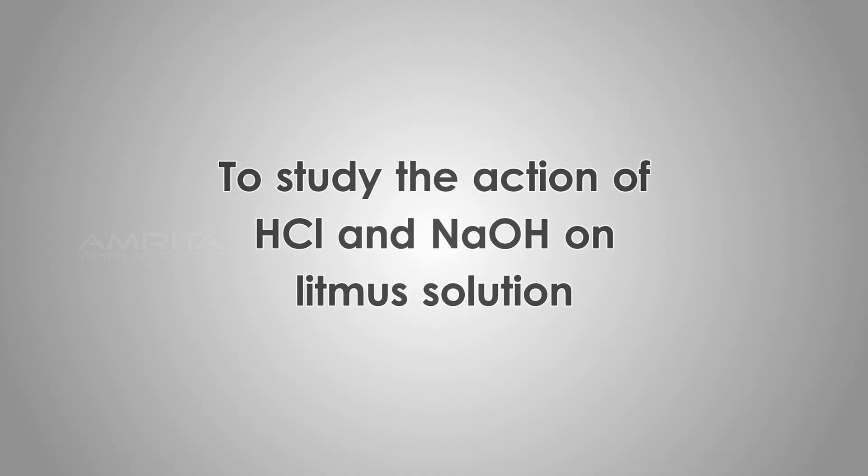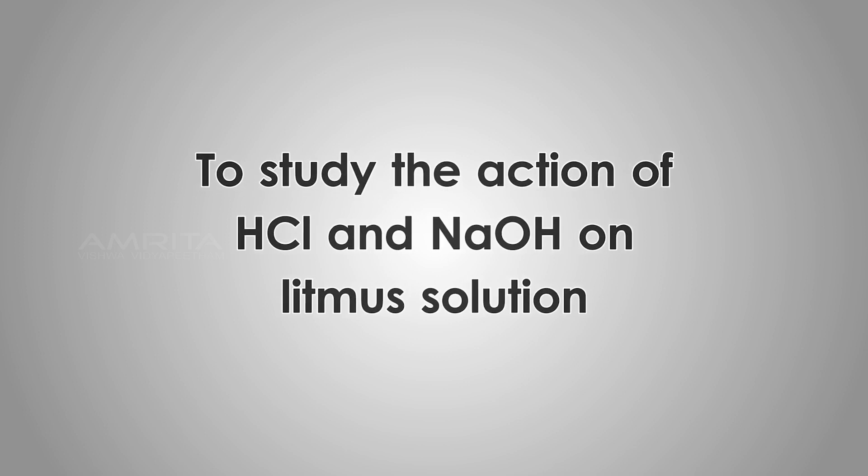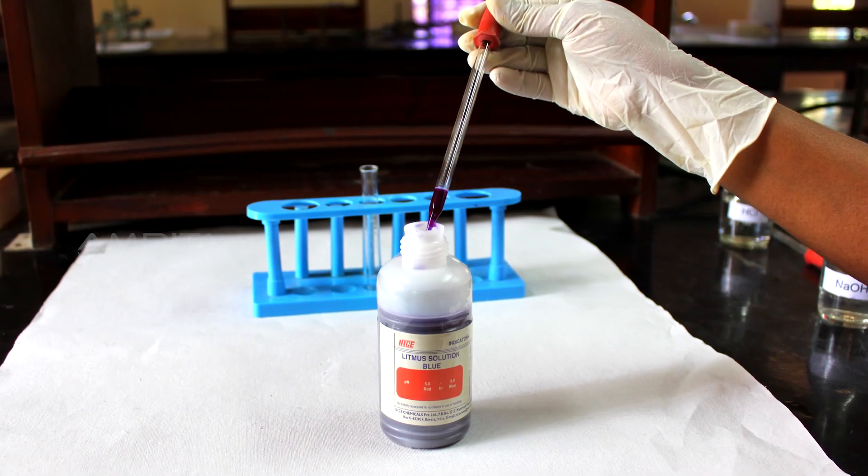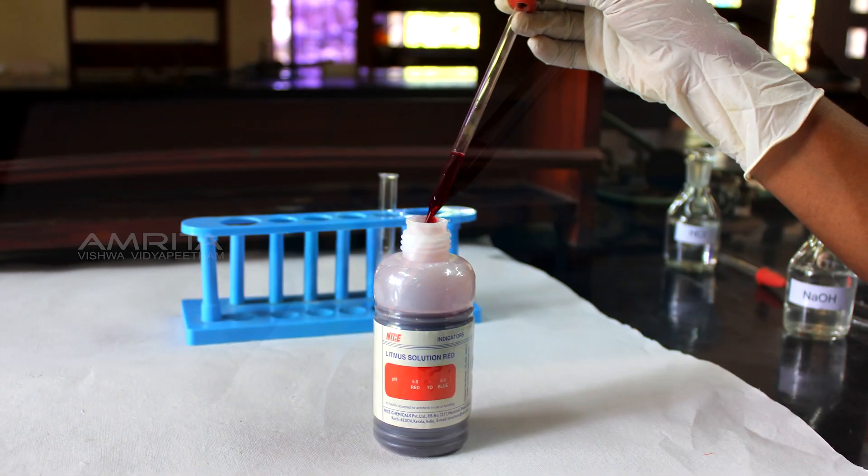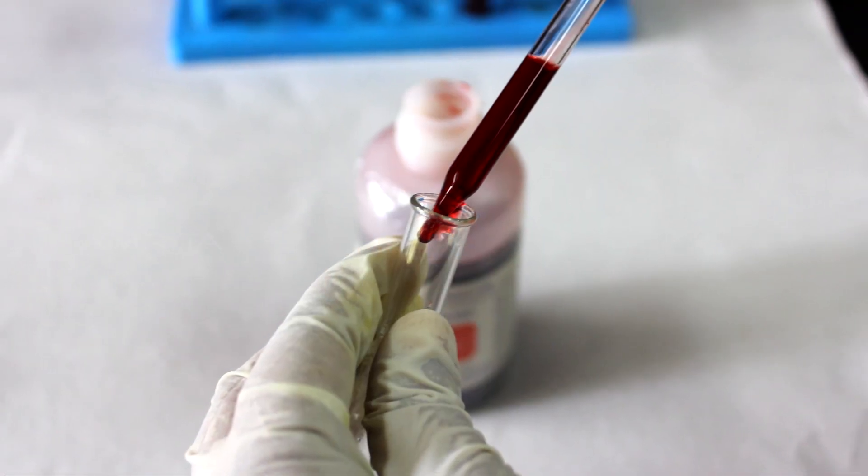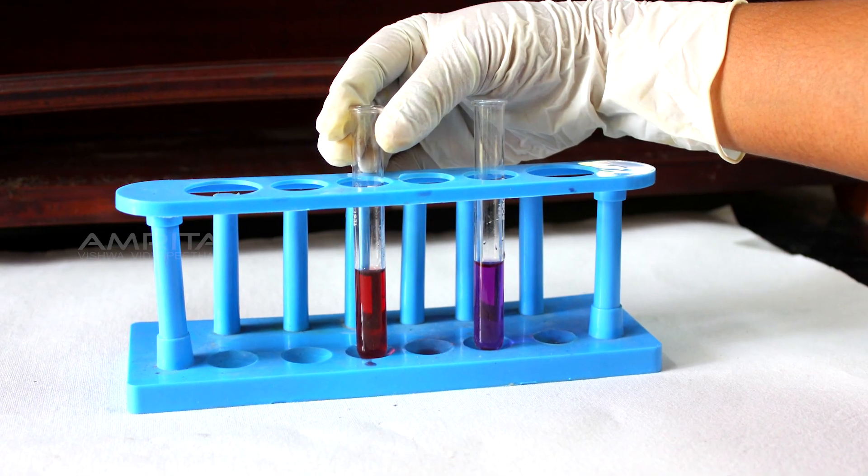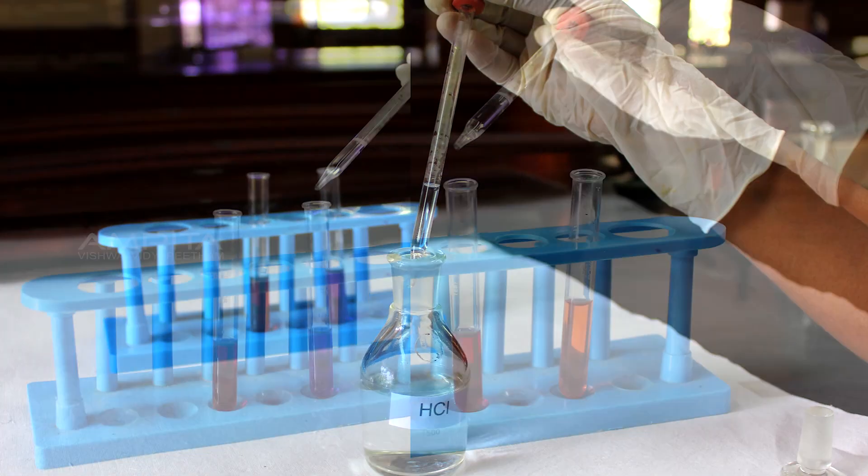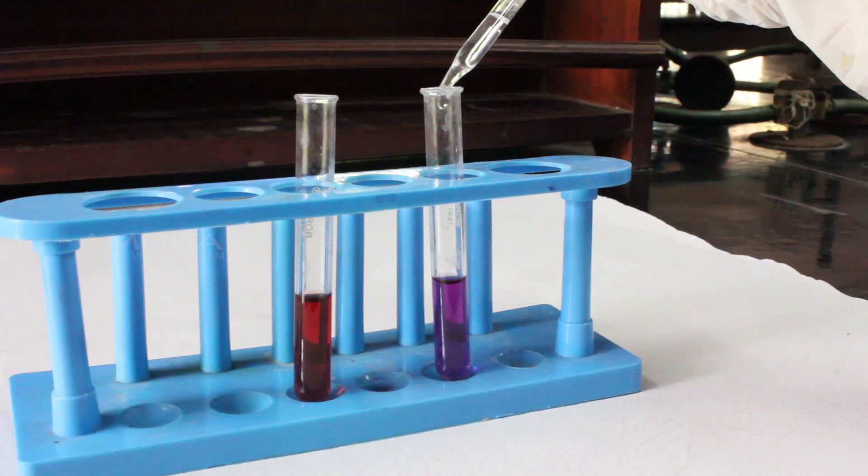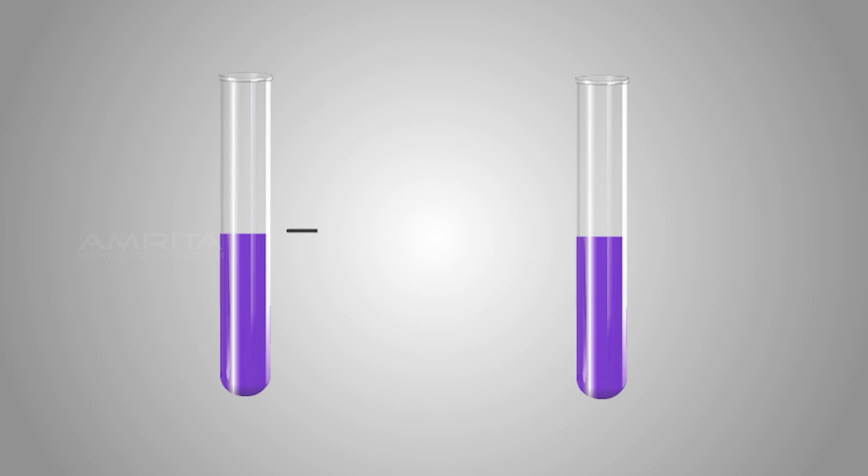To study the action of HCl and NaOH on litmus solution, add a few drops of blue litmus solution in one test tube and red litmus solution in another test tube. Place both test tubes in the test tube stand and add a few drops of HCl in each test tube. You can see that the blue litmus solution changes to red. From this, we can infer that HCl is an acid, having a pH value below 7.